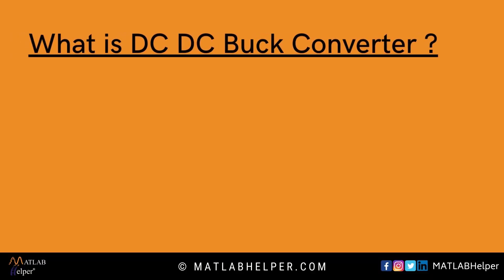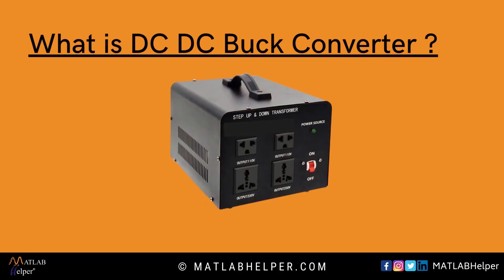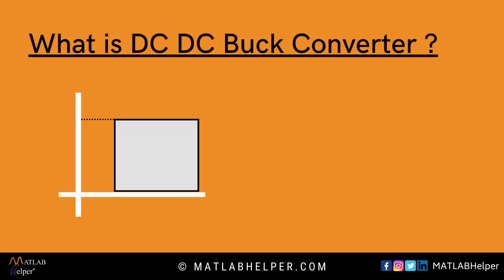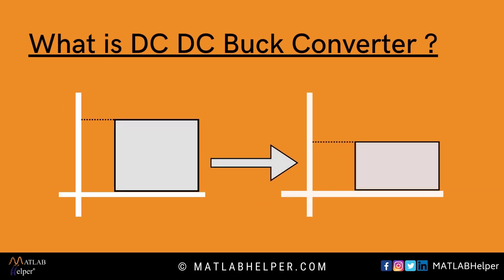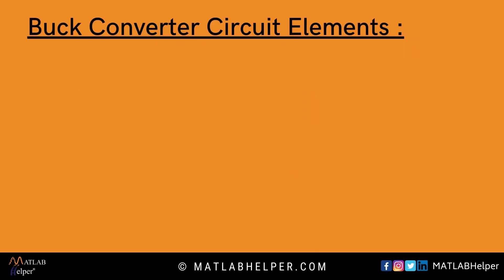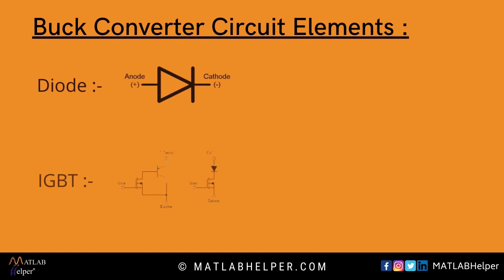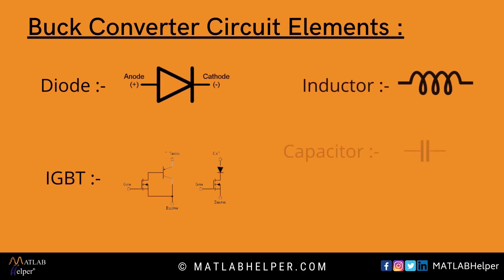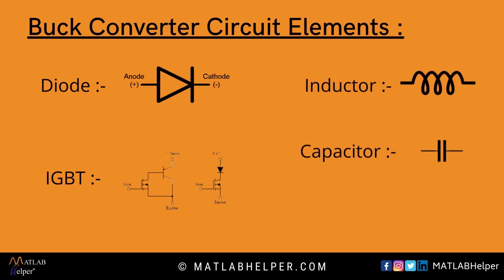What is a DC-DC buck converter? A DC-to-DC buck converter is a step-down DC-to-DC power converter which steps down voltage, or decreases the DC voltage, while drawing less average current from its input supply to its output load. A buck converter circuit consists of two semiconductors — a diode and a transistor (an IGBT) — and two energy storage elements: an inductor and a capacitor, and a resistor load.